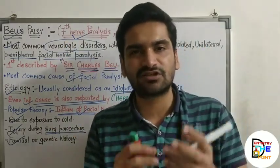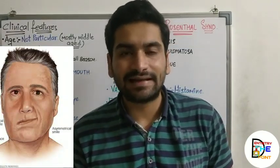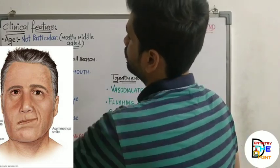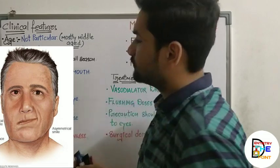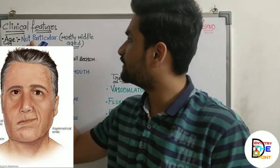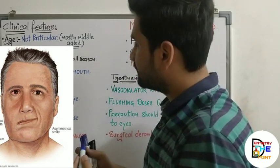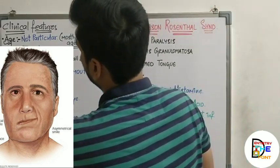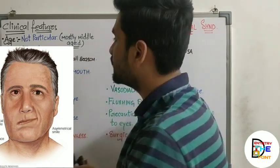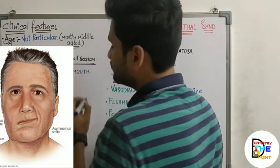Moving on to the clinical features of Bell's palsy — the middle age group is most commonly affected, but there is no strict age range specified. Females are more commonly affected compared to males, with a slight predilection seen towards females. It usually develops in spring and fall season.